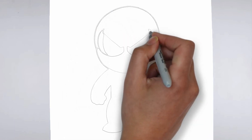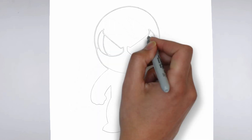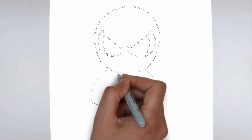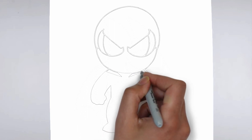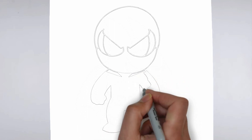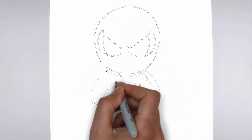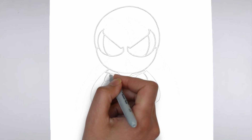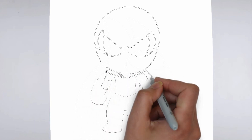Next, we'll start to add some details. Using darker, more defined lines, begin to add in the features of your subject. Pay close attention to the reference image or object you're drawing from, and take your time to get the details just right.